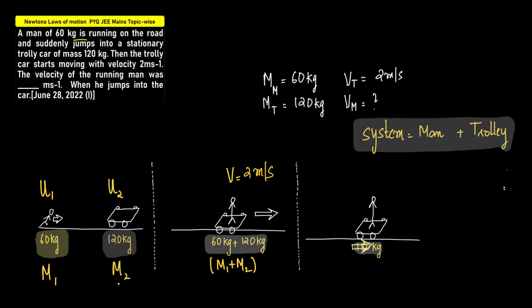A man of 60 kg running on the road, he jumps to the trolley, it's a stationary trolley car, which means this velocity is equal to zero. A man jumps into it with velocity, he's running and he jumps into this trolley, and the trolley starts moving at the speed of 2 meters per second.